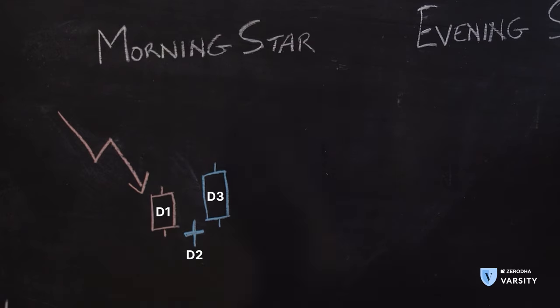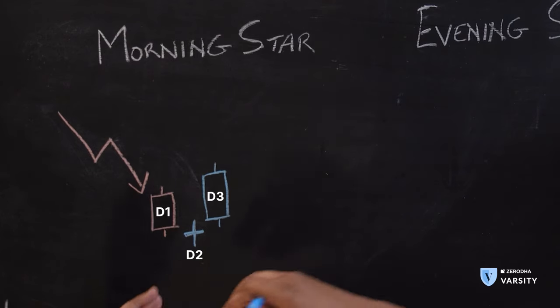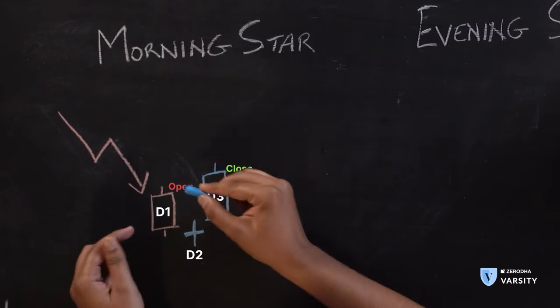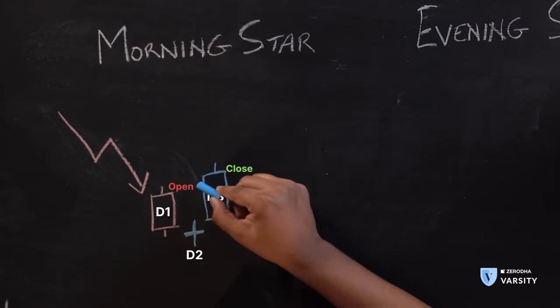So on day one you have a down move; on the second day you have an indecision day which is a doji or spinning top; and on day three you have a bar which completely negates day one, showing that the bulls are now in control. This is a reversal pattern and we expect the markets to reverse towards the upside. It's important to note that even if the day three close is not really above the open of day one, it's still okay — the candles can be the same size, or the close for day three can be around the open. The psychology behind the pattern is that the bulls are in control, and that's the most important part.